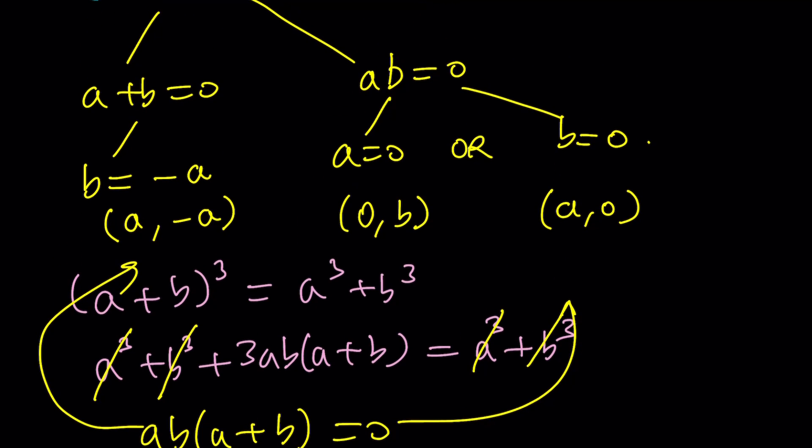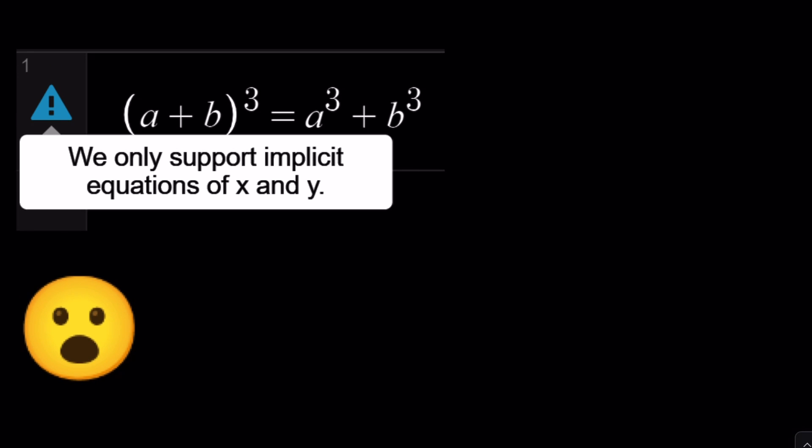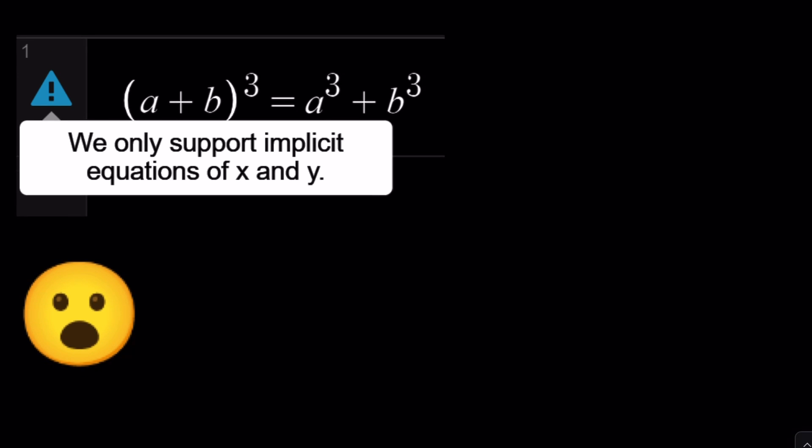Okay, so we can express these solutions in terms of a and b. But when it comes to graphing these on Desmos, we run into a problem. Desmos only supports x and y variables.